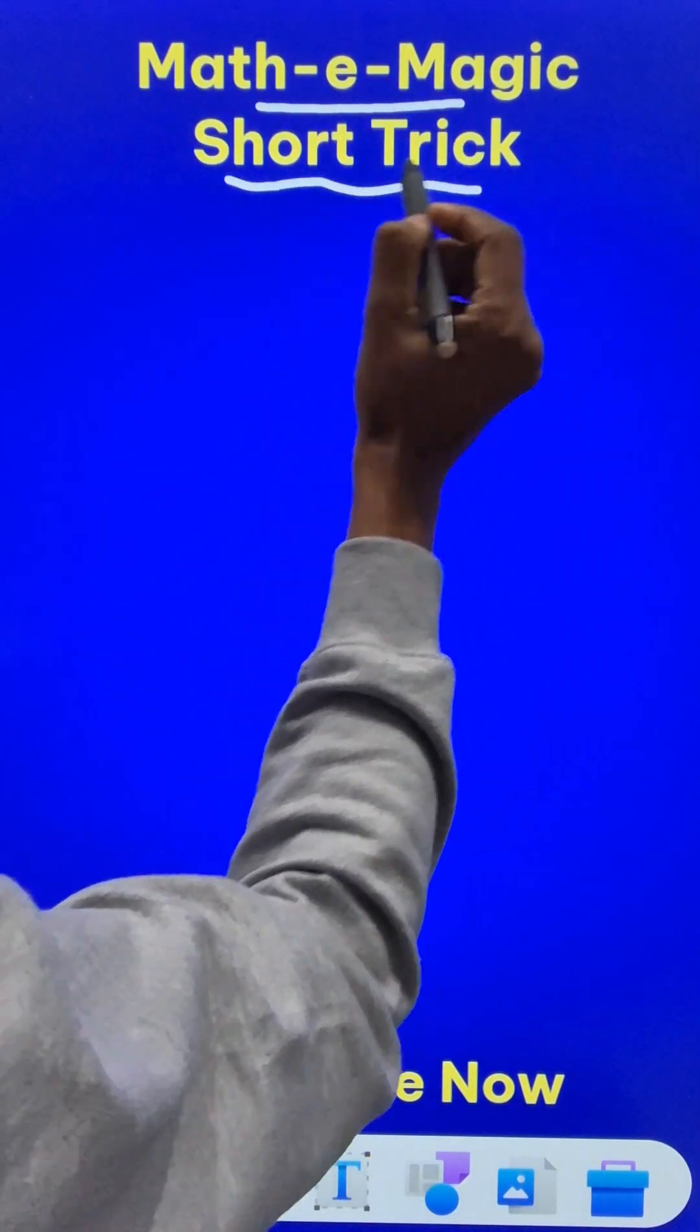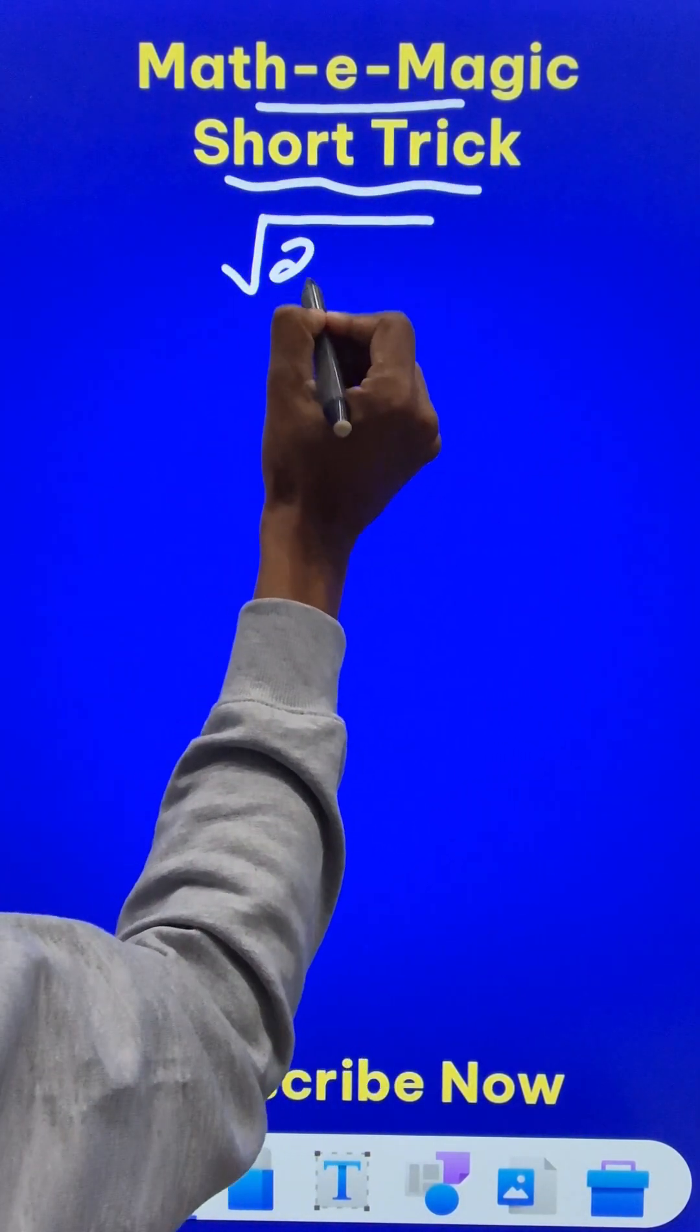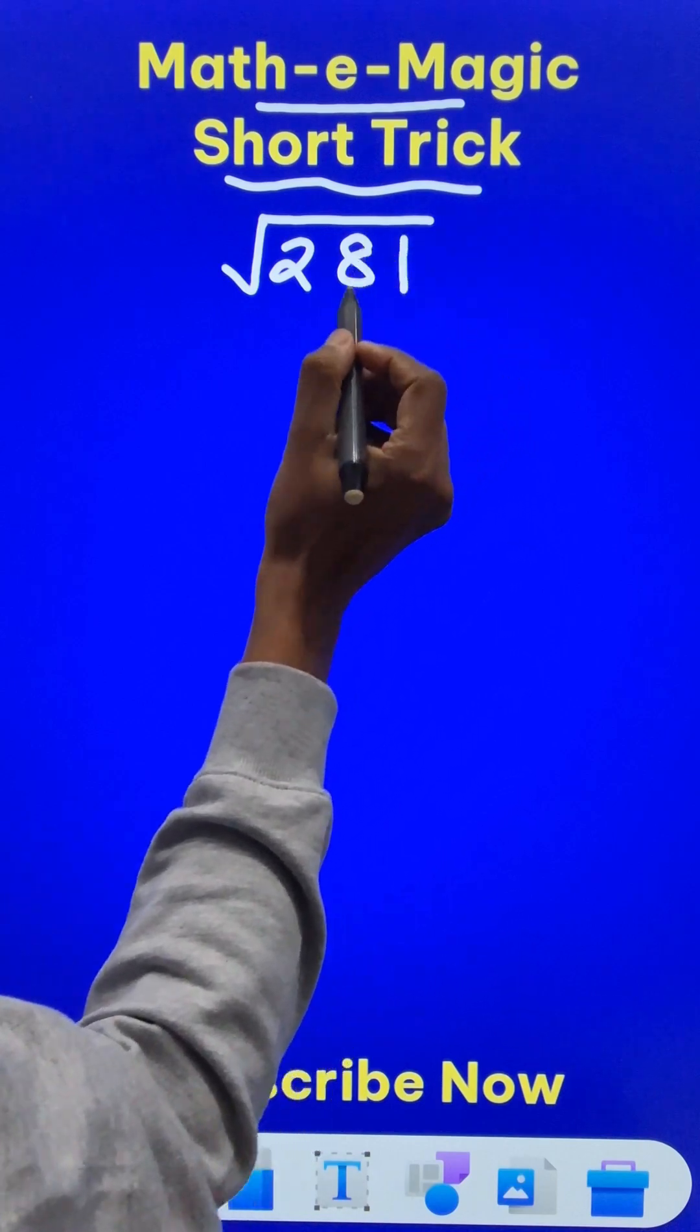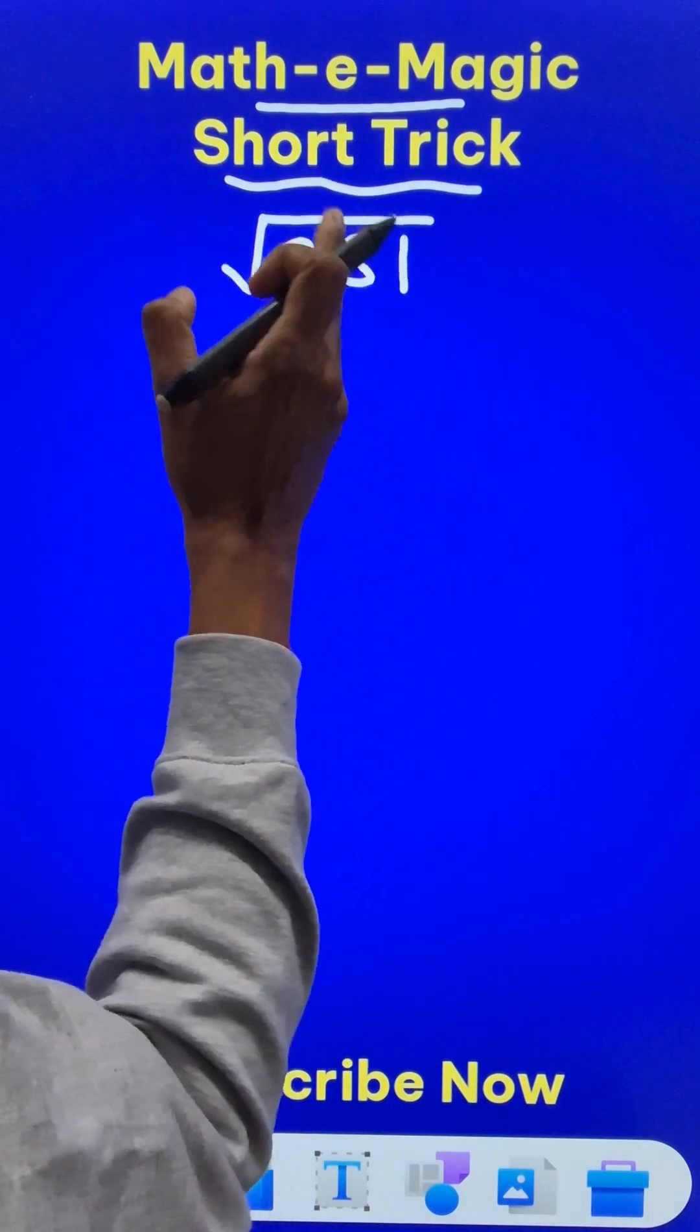Here is a mathematics short trick to find the square root of an imperfect square number like 281. You don't need the long division method.